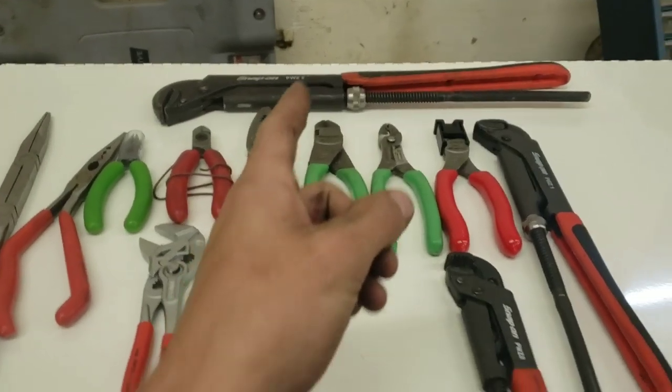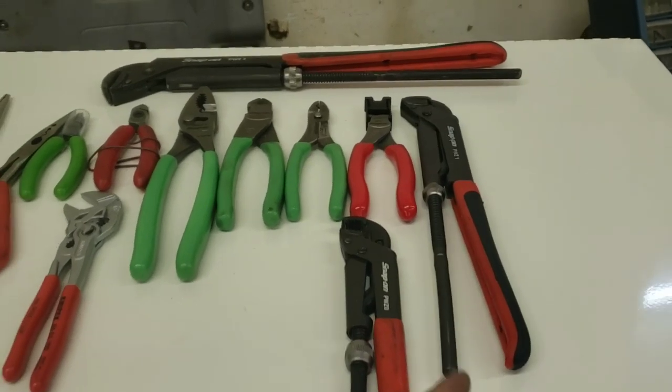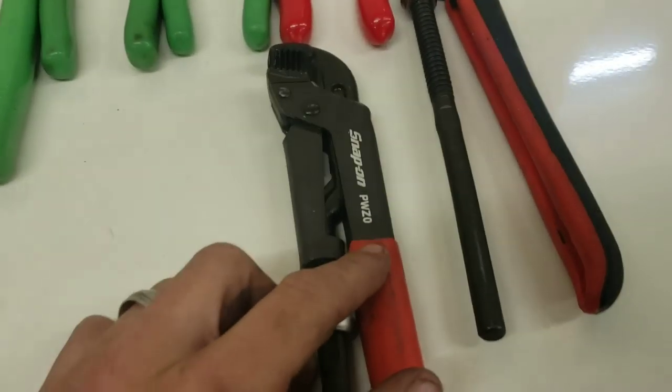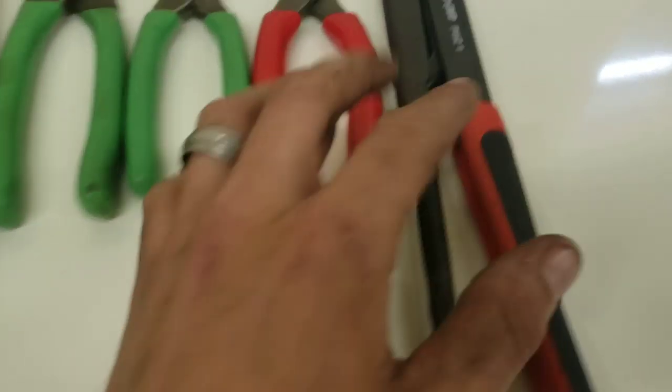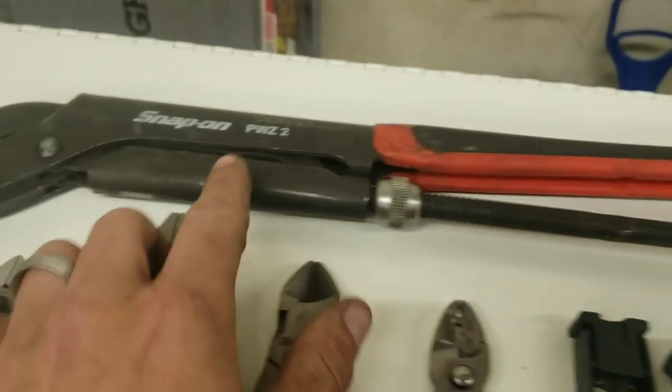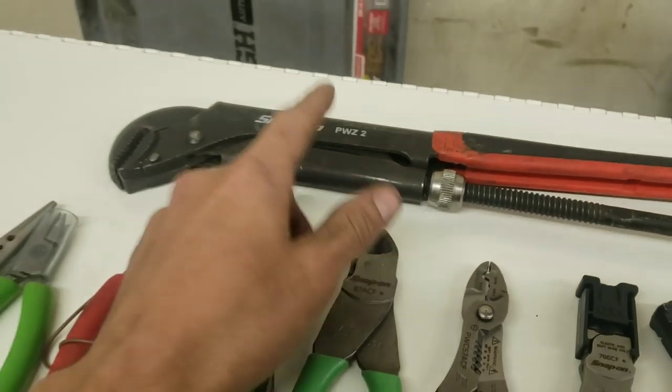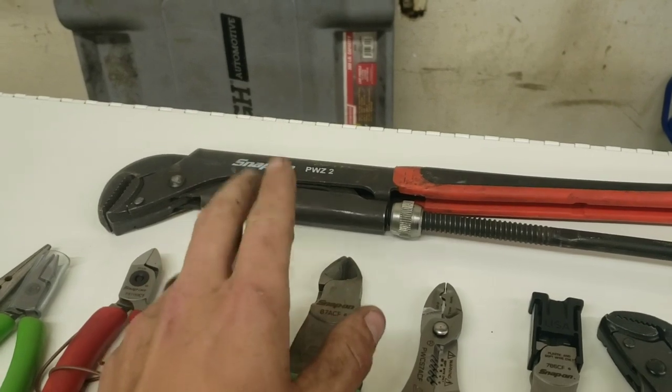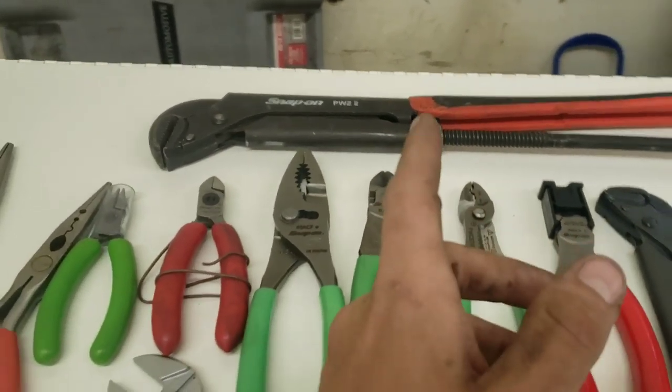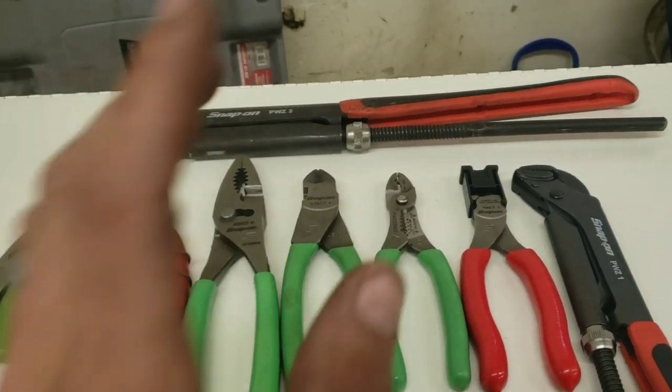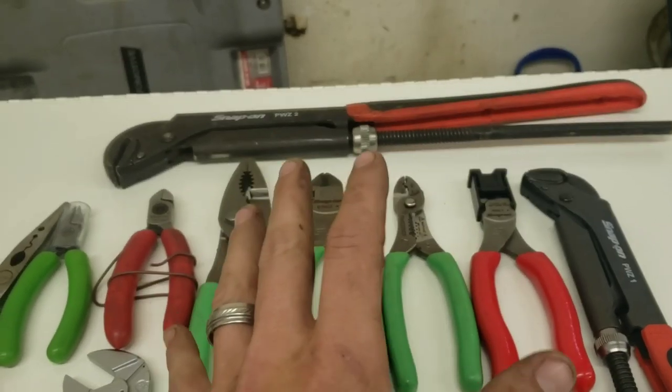Starting out with the PWZs, I've got these three sizes: the PWZ0, PWZ1, and PWZ2. I want to get the PWZ3, which is bigger than the 2, but I haven't ordered that one yet.